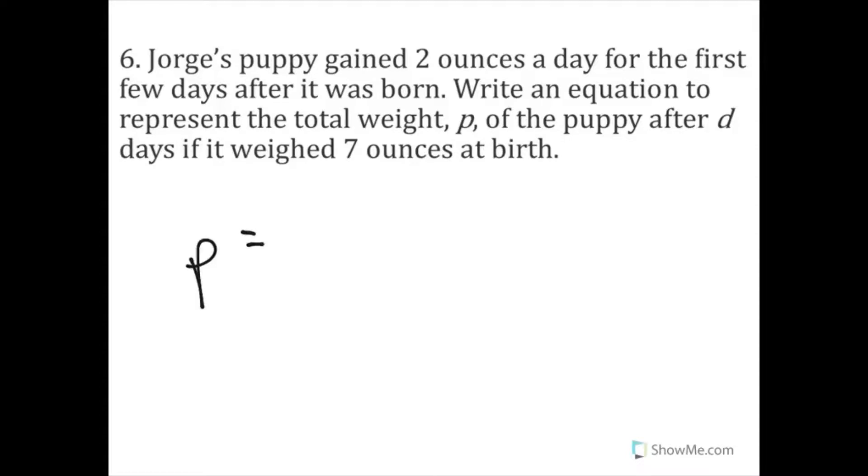So I know that P equals how much the puppy weighed, right? And I know that he gained two ounces a day. And I don't know how many days he did. Don't know how many days. First few days. It just says few days, right? So D is going to equal days. And then I know it weighed seven ounces at birth. So two D plus seven. It weighed seven ounces at birth. So I'm going to take how many days it was, multiply those days by two because it was two ounces each day. I'm going to add seven to it because he weighed seven ounces at birth. So you could have done something different. There were several ways to do this correctly. And I will obviously pause this video to let you tell me what you wrote down and see if that's correct as well.